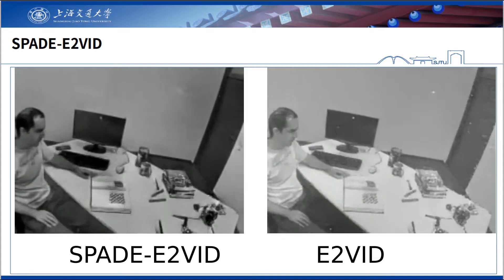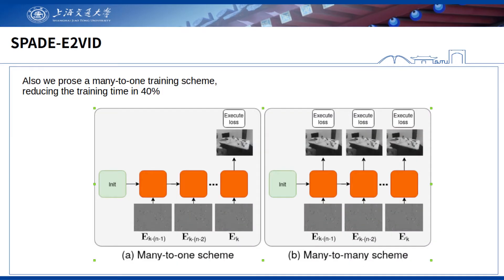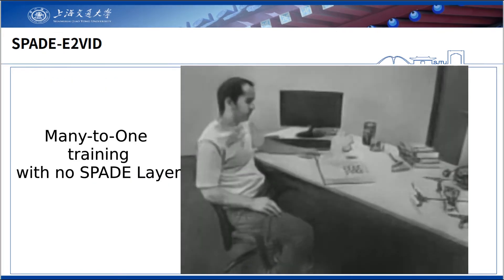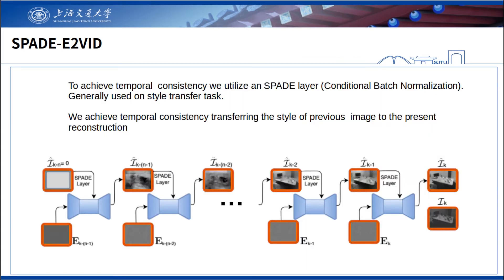Furthermore, we propose a many-to-one training scheme for event-based video reconstruction as an alternative. However, models trained with a many-to-one scheme have flickering. To solve this problem, we use a spatially adaptive denormalization layer, which takes the previous reconstructed image.